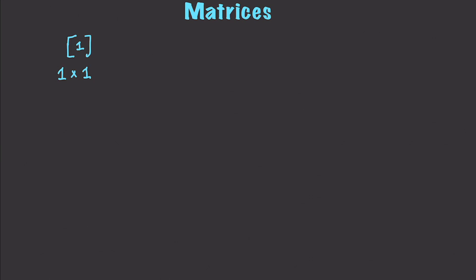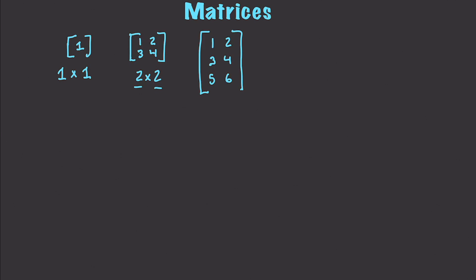Here is an example of a 2 by 2 matrix. And again, we define our rows first, then our columns. And then this would be an example of a 3 by 2 matrix — 3 rows, then 2 columns.